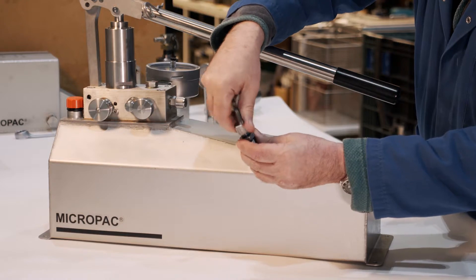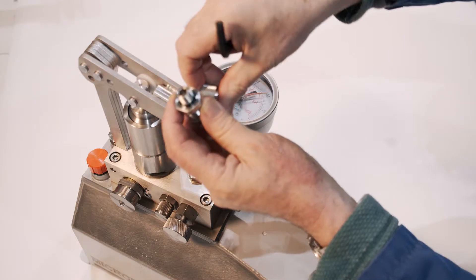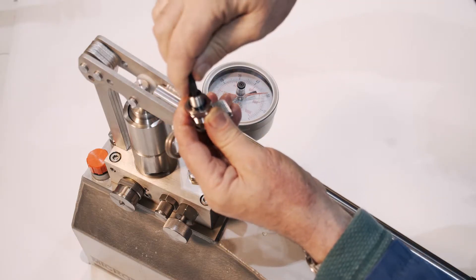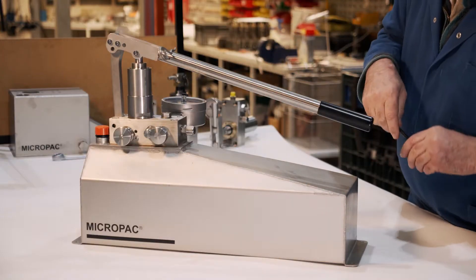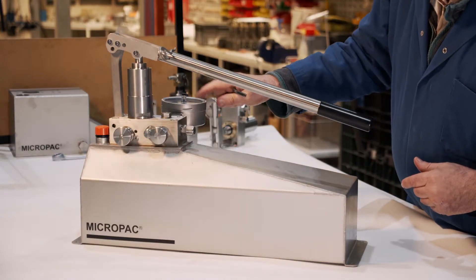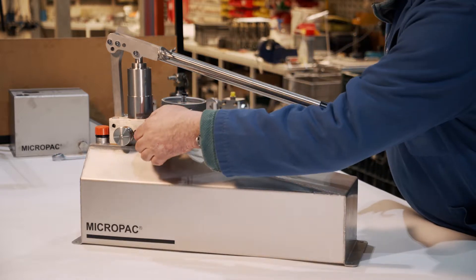Relief valves invariably have an adjusting screw. In this case an Allen key fits into it. I'm going to adjust the setting on this pump here. I want to get up to 50 bar on the pressure gauge.